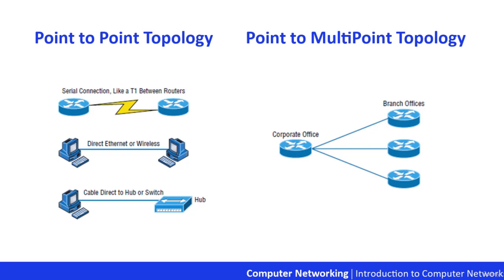Now focus on the figure on the right-hand side of the screen — that is point-to-multipoint topology. As the name suggests, a point-to-multipoint topology consists of a succession of connections between an interface on one router and multiple destination routers — one point of connection to multiple points of connection. Each of the routers and all interfaces involved are part of the same network.